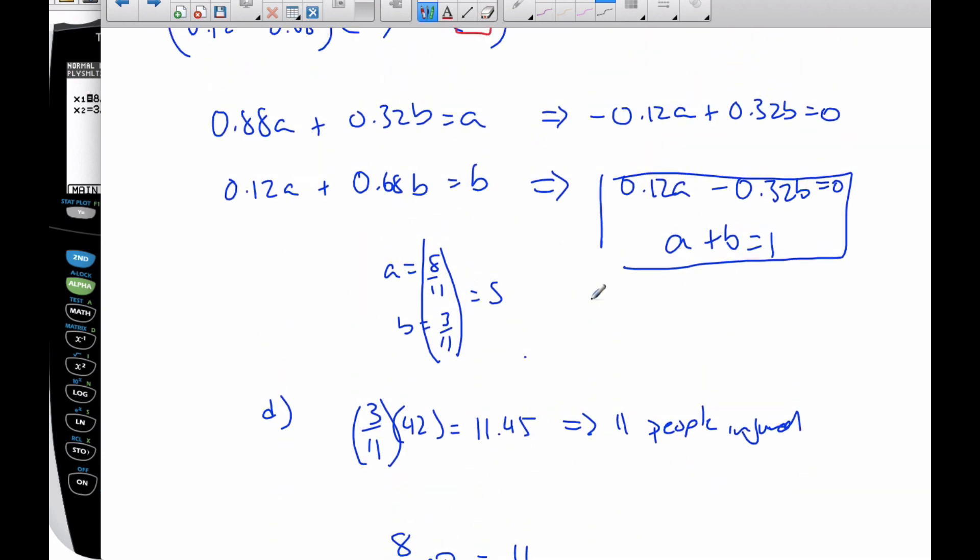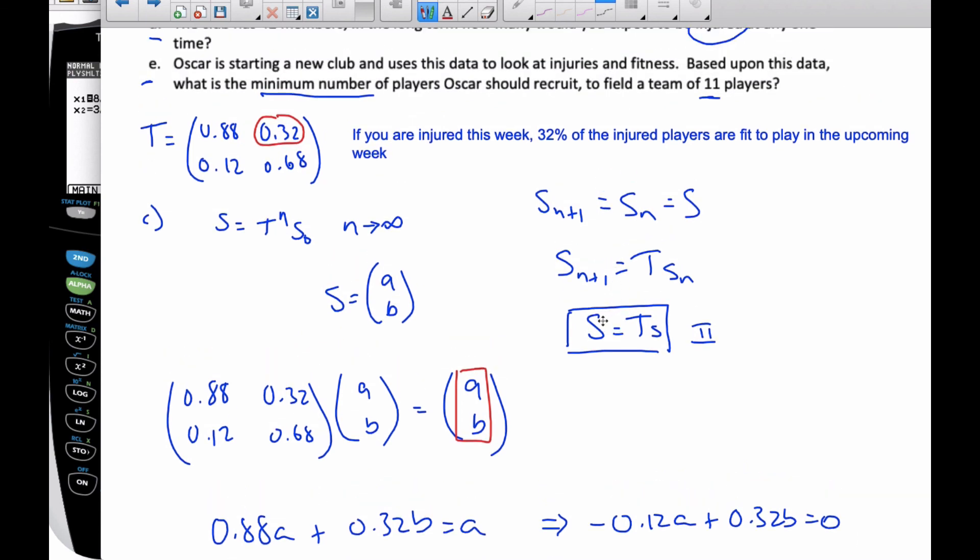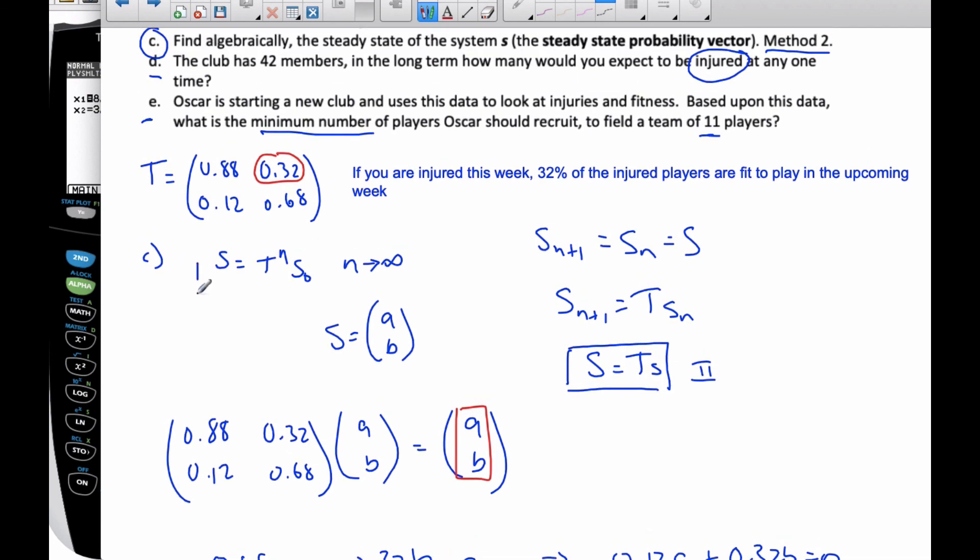So ultimately now we have two methods in order to find our steady state matrix. We have algebraically using this idea here, and we have our calculator way which uses this idea here and making T very large.